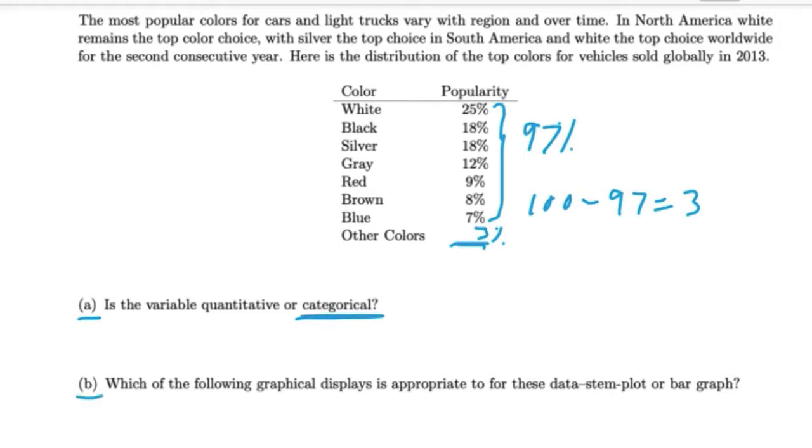Part B: Which of the following graphical displays is appropriate for these data - stem plot or bar graph? For quantitative variables, we use histograms, stem plots, dot plots, etc. For categorical variables, we use pie charts and bar graphs. Since colors is a categorical variable, we use a bar graph.